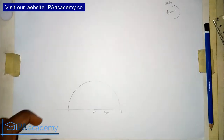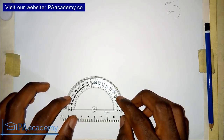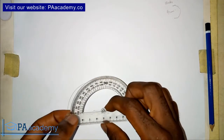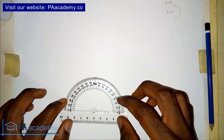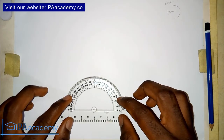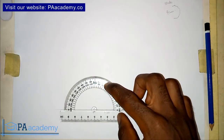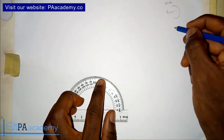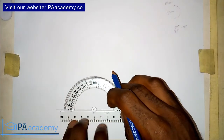Now bring in your protractor and place it on point A. The reason we extended the line is so that the 0° and 180° marks of the protractor rest on the line. We are going to divide the 180° into 10 equal parts — 180 divided by 10 gives us 18 degrees, so we mark every 18 degrees.